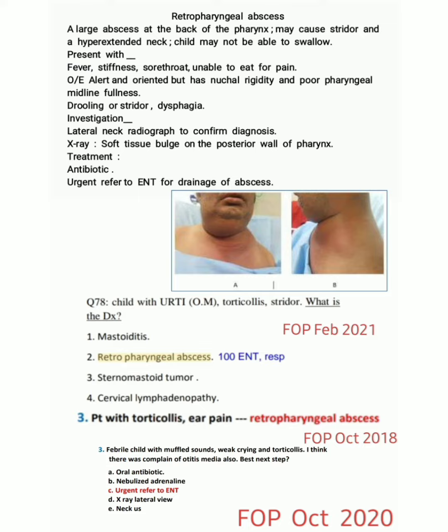The investigation of choice is a lateral neck radiograph to confirm the diagnosis. On x-ray, we find a soft tissue bulge on the posterior wall of the pharynx.